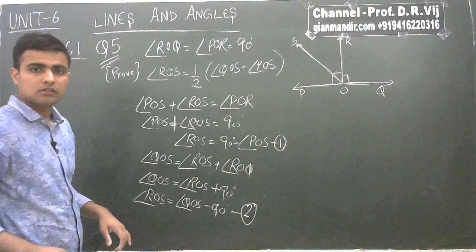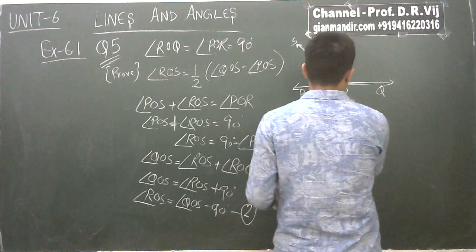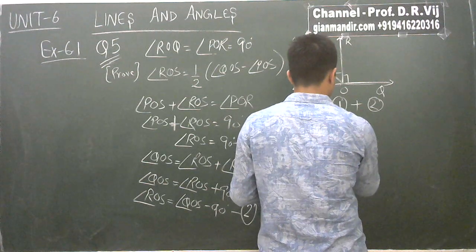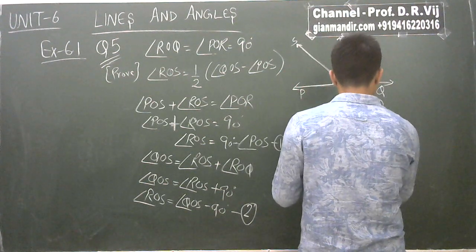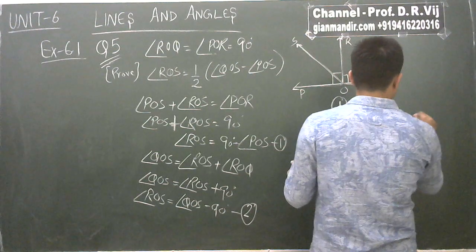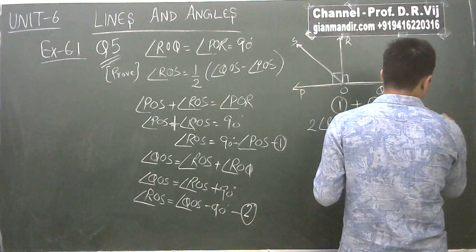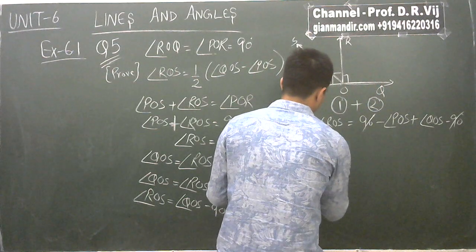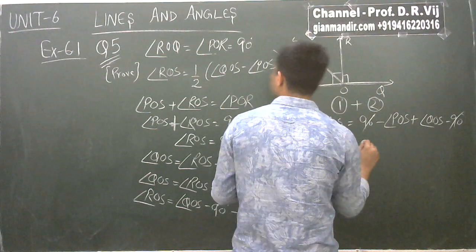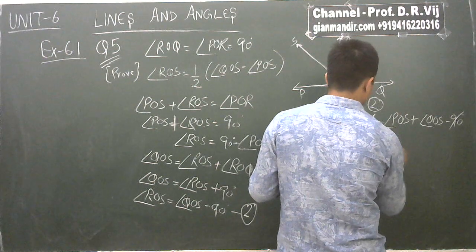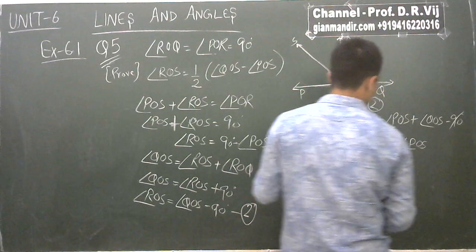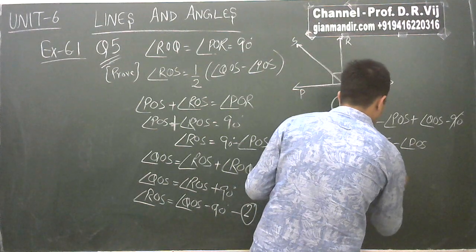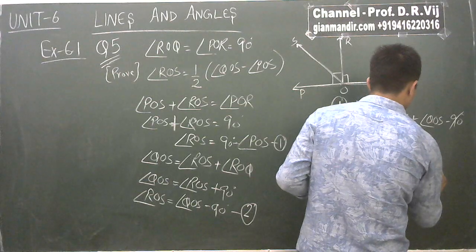Adding equations 1 and 2: 2 times angle ROS equals (90 minus angle POS) plus (angle QOS minus 90). The 90s cancel out, giving 2 times angle ROS equals angle QOS minus angle POS. Dividing both sides by 2: angle ROS equals half of (angle QOS minus angle POS).